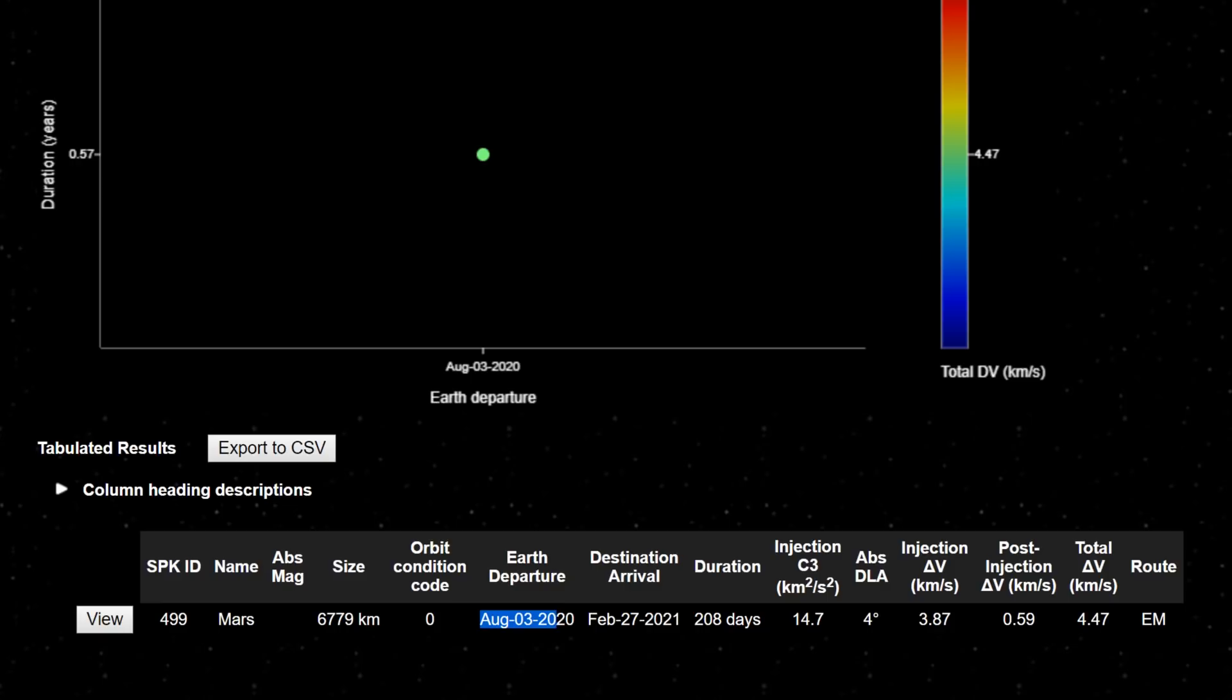it will show us that right here on August of 2020, actually basically a year from when I'm making this video, we have a perfect opportunity for transfer. It will require us to start firing our engine on August 3rd, and we'll arrive at destination on February 27th, 2021, after about 208 days in space.